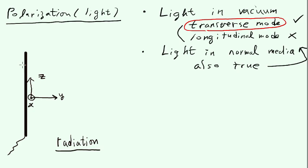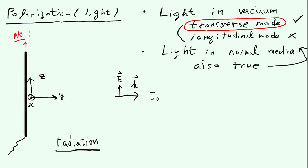If you flow AC current on this antenna, light will come out. When light comes out along the Y direction, it has some intensity I₀, and the electric field oscillates along the Z direction. Is there any light coming out along the Z direction? The answer is no — because on the previous slide we demonstrated that no light going in that direction is absorbed by this antenna, so by time reversal, none is emitted in that direction either.